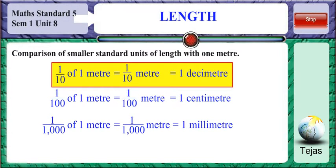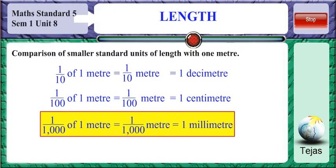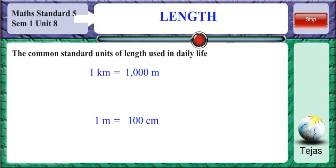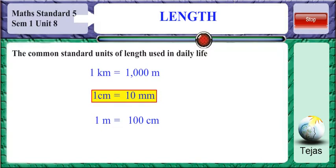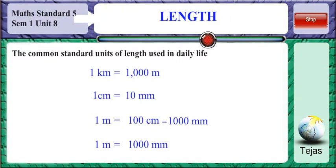Or stated the other way: 1 meter equals 10 decimeters, 1 meter equals 100 centimeters, and 1 meter equals 1000 millimeters. The common standard units used in daily life are: 1 kilometer equals 1000 meters, 1 meter equals 100 centimeters, and 1 centimeter equals 10 millimeters. We derive 1 cm = 10 mm because 100 cm = 1000 mm, so 1 cm = 1000 ÷ 100 = 10 mm.